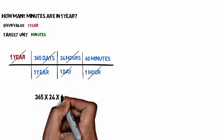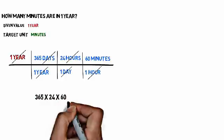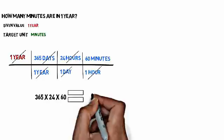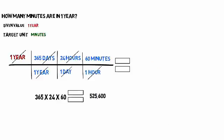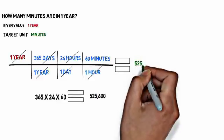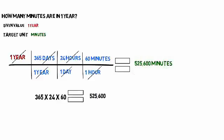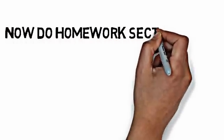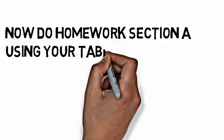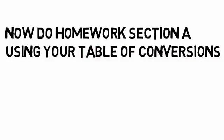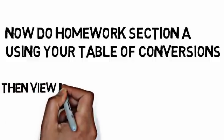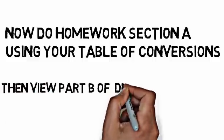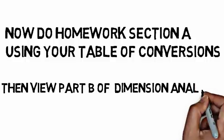We multiply everything through: 365 times 24 times 60, which equals 525,600. So the answer is 525,600 minutes in one year. Now I want you to do the homework for section A using your table of conversions. Once you do that, come back and watch part B, where the problems will be more complex — we'll use fractional conversion factors and fractional starting values.